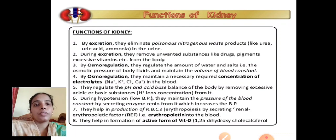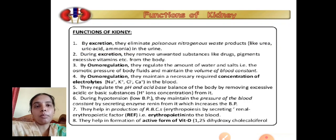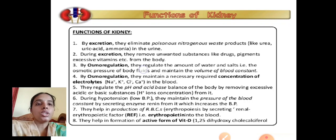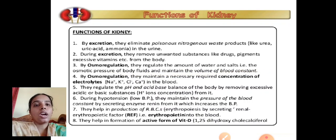The functions of the kidney include: excretion — eliminating poisonous nitrogenous waste in the form of urea, uric acid, and ammonia in urine, along with drugs, pigments, and excessive vitamins. The kidney also performs osmoregulation — maintaining the water balance by regulating the amount of water and salts, the osmotic pressure of body fluids, and maintaining the volume of blood constant. It also maintains the necessary concentration of electrolytes.